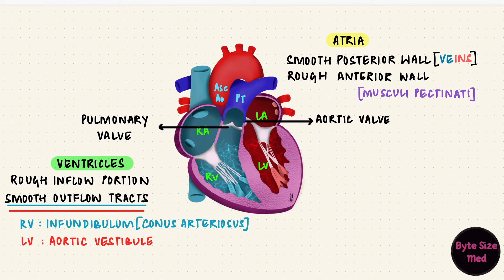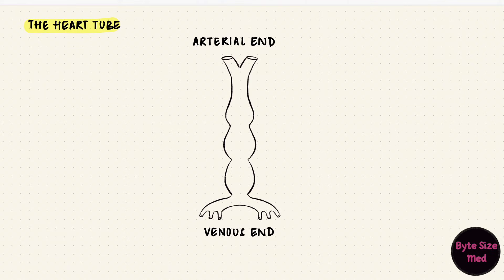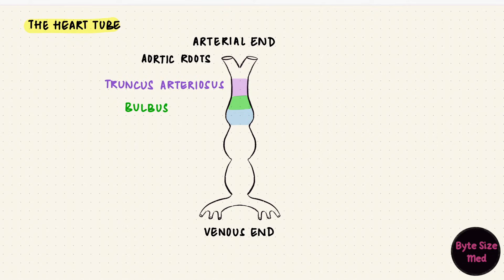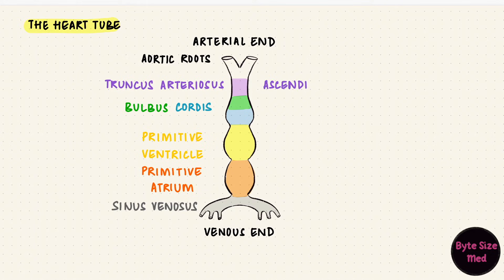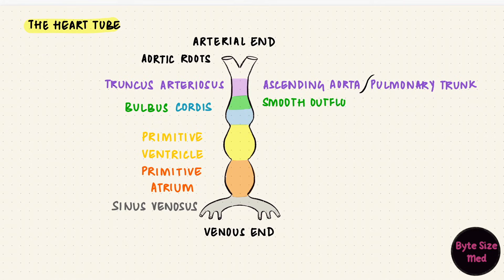Now let's go back to the heart tube. It has alternating dilations and constrictions, which are going to form the different chambers of the heart. At the top is the arterial end, which leads into the aortic sac with the aortic roots. The first part is called the truncus arteriosus. Below that is the bulbus cordis. Next we have the primitive ventricle, then the primitive atrium. The venous end is the sinus venosus. The truncus arteriosus forms the ascending aorta and the pulmonary trunk. The bulbus cordis forms the smooth outflow tracts of the ventricles — the infundibulum on the right and the aortic vestibule on the left. The proximal third of the bulbus cordis forms the trabeculated part of the right ventricle.